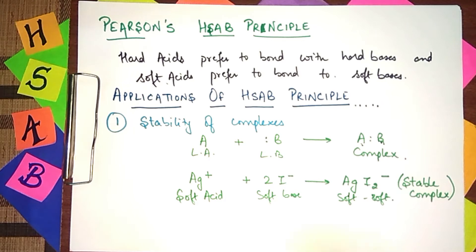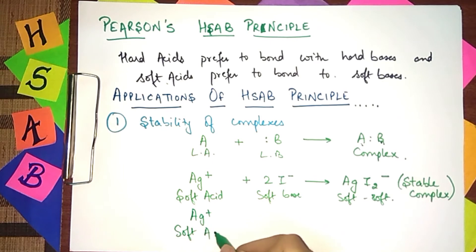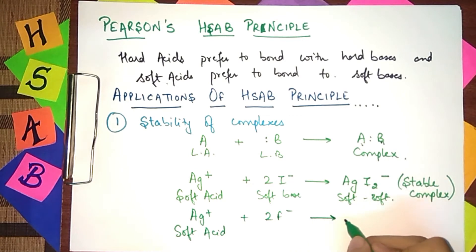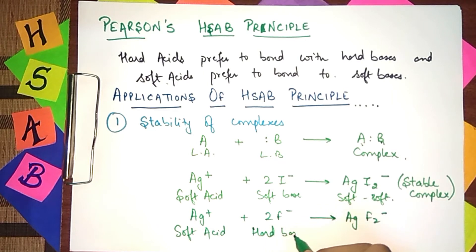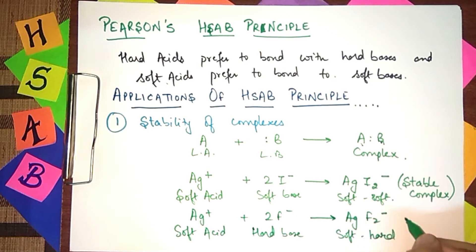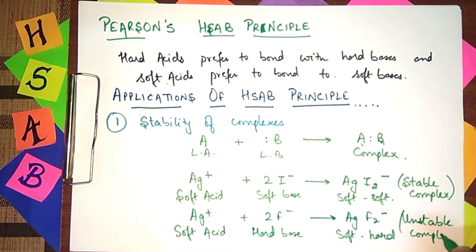Here is another example. Silver ion (Ag⁺) is a soft acid. If we combine it with fluoride, which is a hard base, that will be an unstable complex. This is the main point of the first application — same type combination (hard-hard or soft-soft) gives stable complexes, while mismatched combinations give unstable complexes.